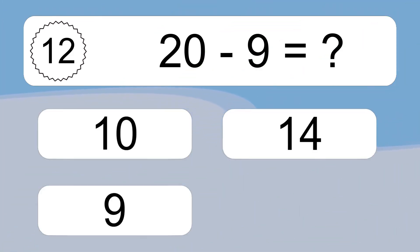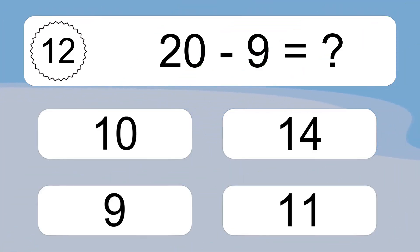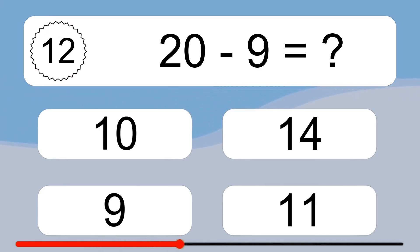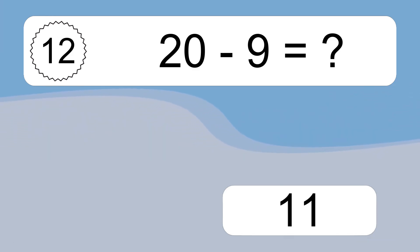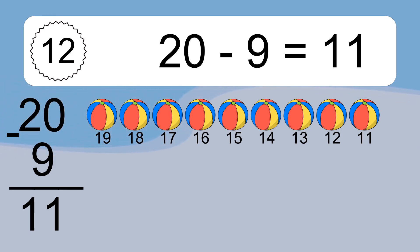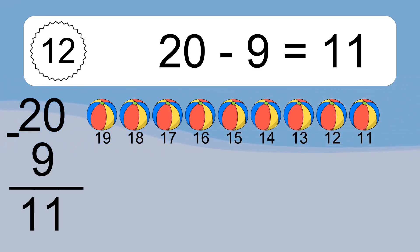20 minus 9 equals what? 20 minus 9 equals 11. Let's count it: 19, 18, 17, 16, 15, 14, 13, 12, 11.